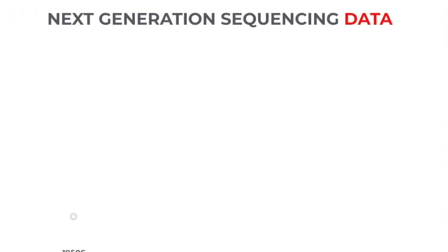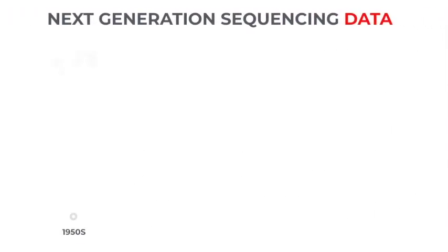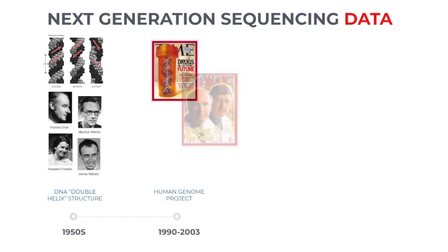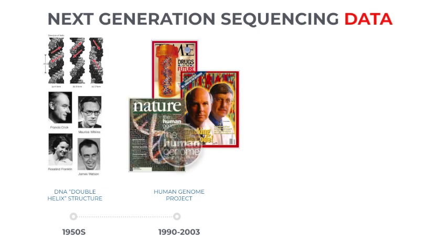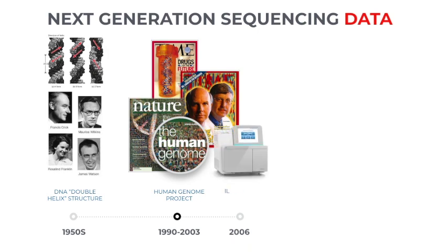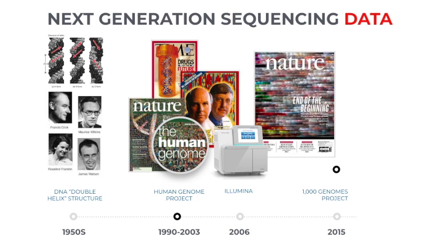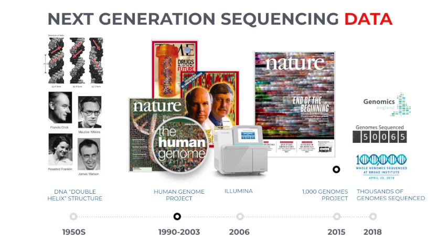The year 2020 marks a 70 year mark since the discovery of the structure and function of the DNA molecule. It took almost 50 years from that time to sequence the first human genome. But soon after, the technology developed evolved rapidly. By 2015, the 1000 Genome Project brought a significant number of whole genome sequences to the research community, and in 2018, over 100,000 whole genomes were sequenced.